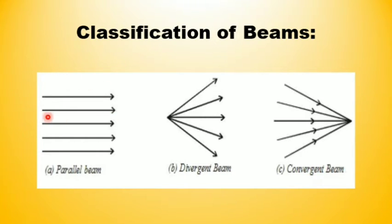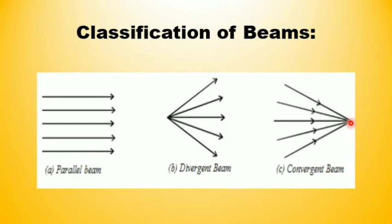Beta, jab rays parallel hoti hain, to wo parallel beam kehlaati hain. Aur jab rays kisi ek jagah pe, kisi ek point pe mil jaati hain, to wo divergent beam kehlaati hain. Aur jab kisi ek point se jo rays hain, wo spread ho rahi hoti hain different direction mein, wo convergent beam kehlaati hain. These are the three classes of beam.